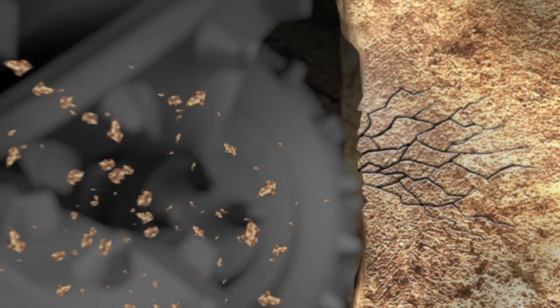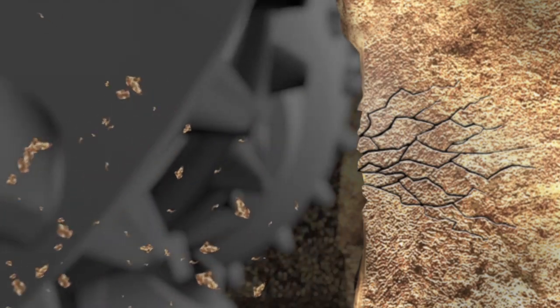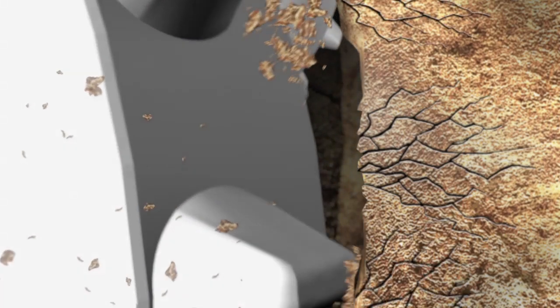But chipping away the rock is only part of the process. The cuttings must be removed from the hole for the bit to advance.